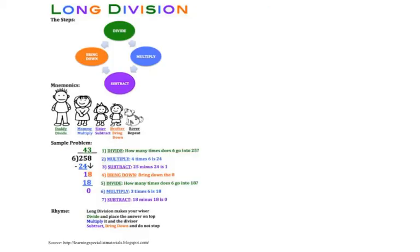Our next set of problems are long division problems. The steps are: divide, multiply, subtract, bring down, and keep repeating until you have no more numbers to bring down. You can remember that with: Daddy — divide; Mommy — multiply; Sister — subtract; Brother — bring down; and Rover — repeat. So you remember your family for each step.